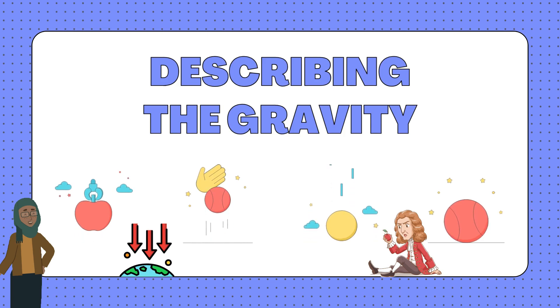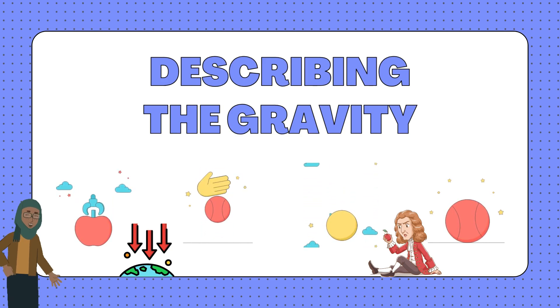Gravity is like a magic glue that pulls everything toward our planet, making sure we don't float away into space. It's what keeps our feet firmly on the ground and makes things fall when we drop them.